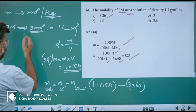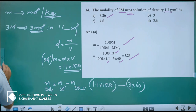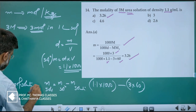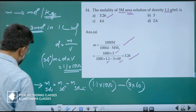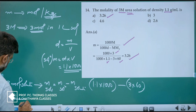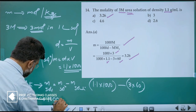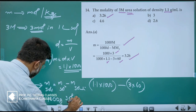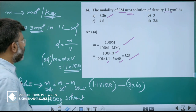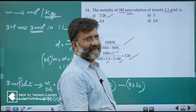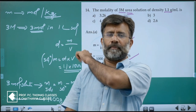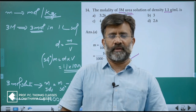Now we have 3 moles of solute in that calculated mass of solvent. To find molality, we need moles of solute in 1000 grams of solvent. So cross multiply: molality equals 1000 into 3 divided by the mass of solvent. This leads you to the same shortcut formula. Both methods — the step-by-step and the shortcut — give the same answer.